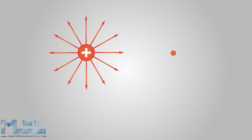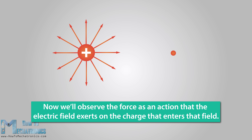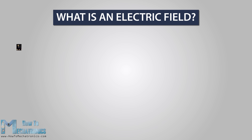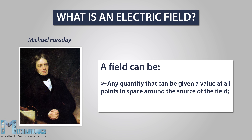When we talked about Coulomb's law, we observed the force between two charges as an action between two objects. Now we will observe the force as an action that the electric field exerts on the charge that enters that field. Michael Faraday was a British scientist and was the first person to introduce the concept of electric field. A field can be any quantity that can be given a value at all points in the space around the source of the field, or a region of influence.